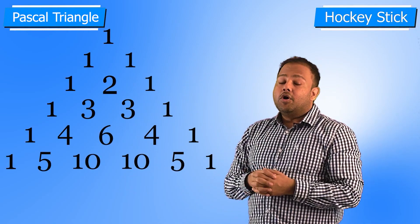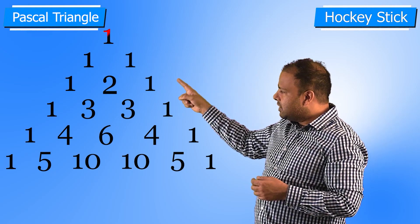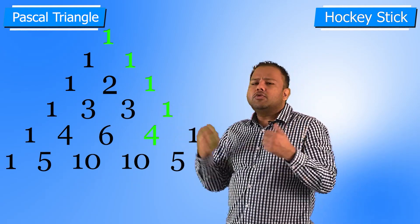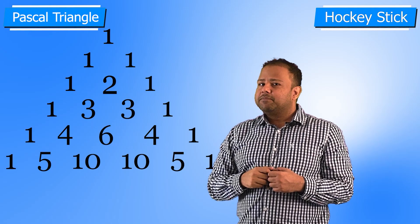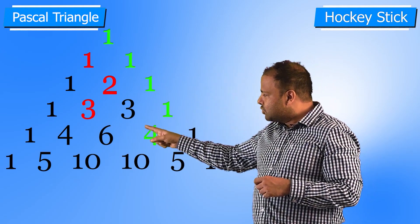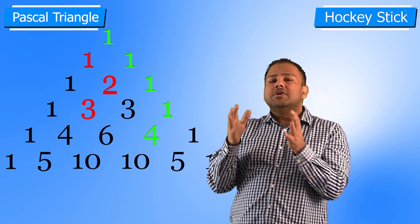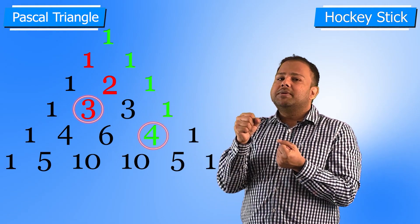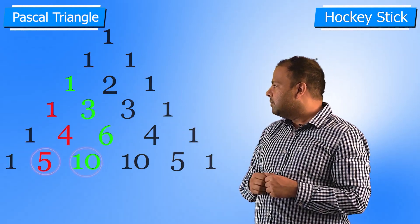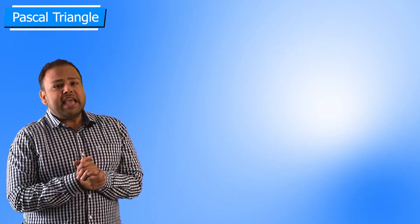There is also the hockey stick pattern. You know what a hockey stick looks like — the sum of all numbers along the stick equals the number at the hockey head. All the hockey sticks in the triangle follow this: the sum of the numbers on the stick equals the head number.